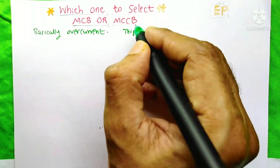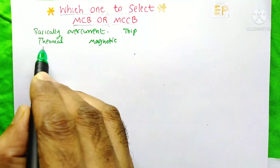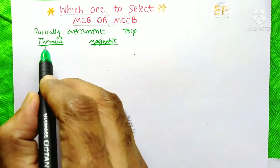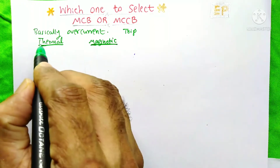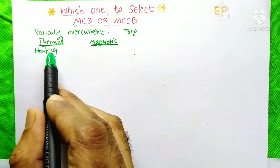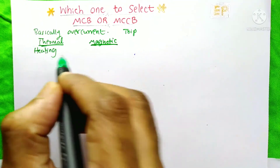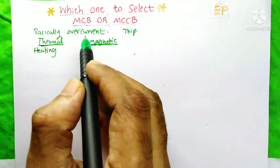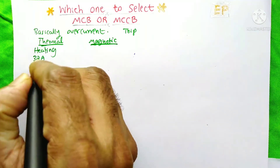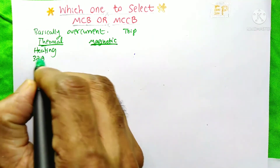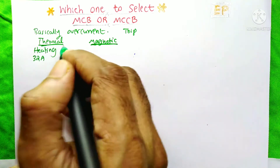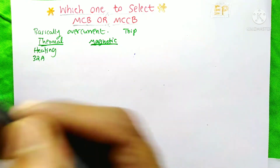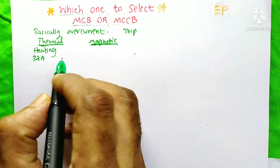Both MCB and MCCB work on the same principle. Both devices have two tripping mechanisms: the first one is thermal tripping and the second one is magnetic tripping. Thermal tripping, as the name indicates, is related to heating. Whenever the current increases beyond the rated current — for example, if the MCB or MCCB is rated for 32 amperes and the current is 33 or 34 amperes — the bimetallic strip inside these devices will heat up due to this overcurrent.